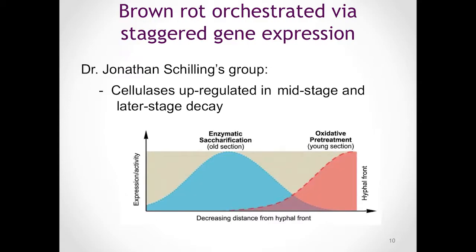Let's take a look at figure four from the paper. On the Y-axis, we see transcriptional activity. On the X-axis, we are looking at decreasing distance from the hyphal front. Starting on the right, looking at this reddish area, we are looking at the hyphal front, which you can think about as the interface between healthy wood and an advancing growing mycelium. It turns out that transcriptional activity here shows very little or no enzymatic saccharification taking place — saccharification meaning complex carbohydrate chains broken down into simpler subunits via enzymes. So in the red area, we really find our oxidative pretreatments.